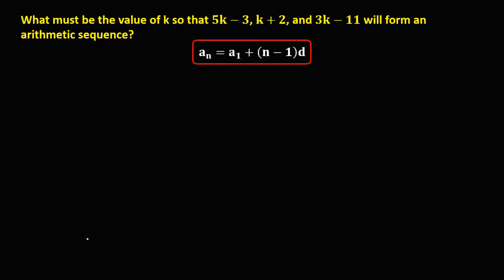Using the arithmetic sequence formula with the given terms: since 3k minus 11 is the last term, that is a sub n. And 5k minus 3 is the first term, a sub 1. Then k plus 2 is the second term, a sub 2.